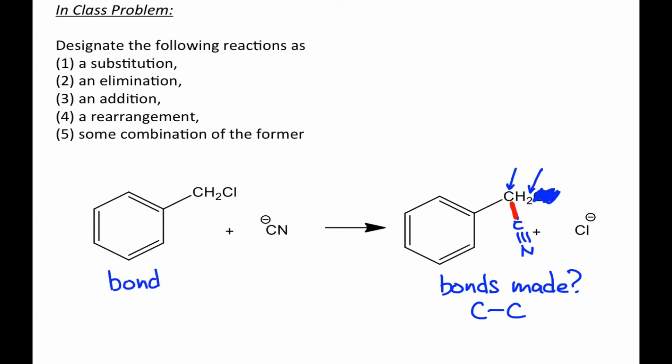If we look on the reactant side, we can ask about the bonds broken in the reactants. And here again, the only structural change that appears to have occurred is loss of chloride from the starting material. And so the bond broken here must be the carbon-chlorine bond.